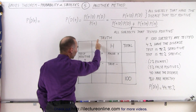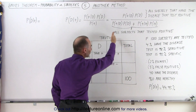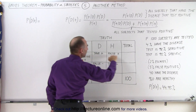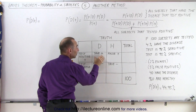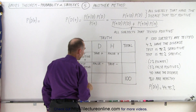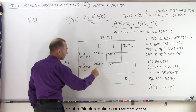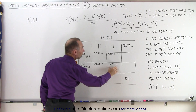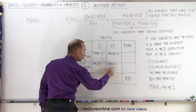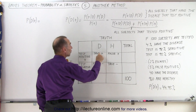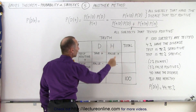This column represents all the subjects that have the disease, and this column represents all the subjects that are healthy. This row represents all the subjects that test positive — whether they have the disease or are healthy — and this row represents all the subjects that test negative, whether they have the disease or are healthy. That's why we have what we call the true positives and the true negatives: true positives are all the ones who have the disease and test positive, and true negatives are all the ones who are healthy and test negative.